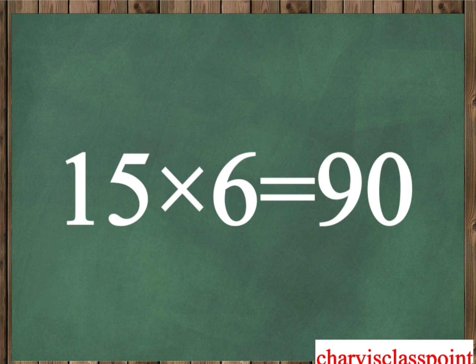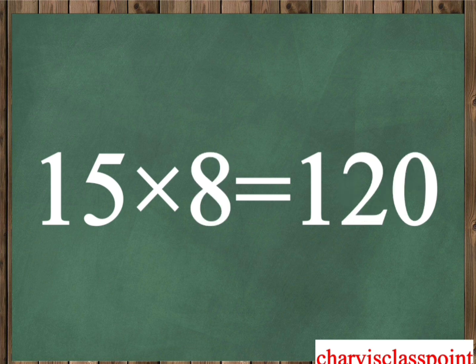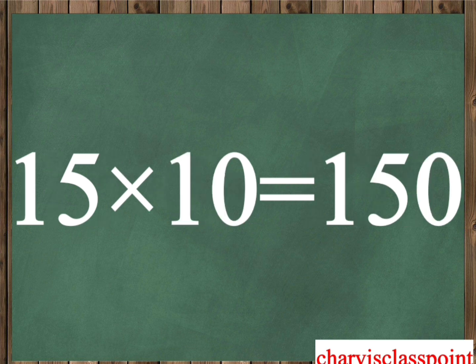Fifteen five is seventy-five. Fifteen six is ninety. Fifteen seven is one hundred five. Fifteen eight is one hundred twenty. Fifteen nine is one hundred thirty-five. Fifteen ten is one hundred fifty.